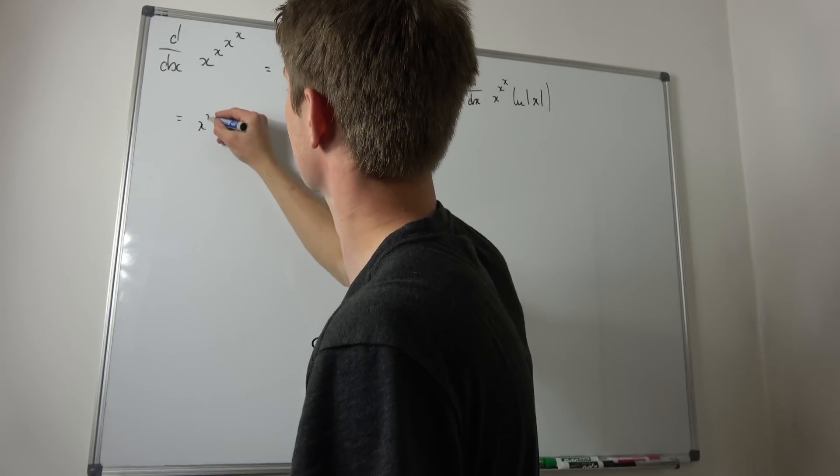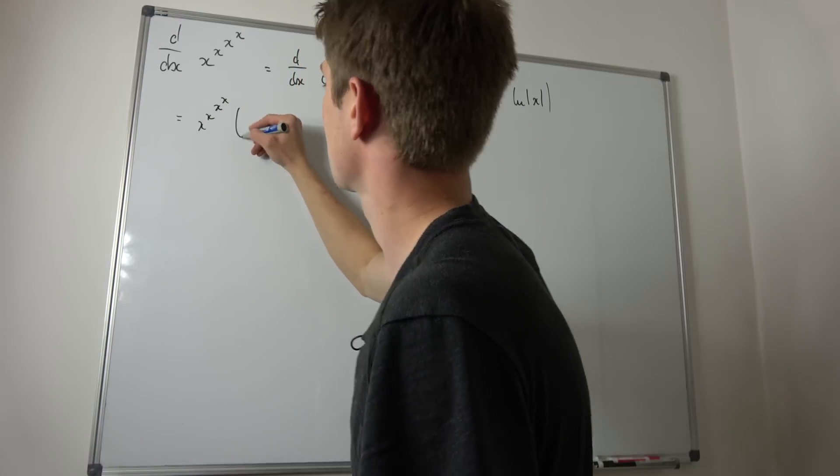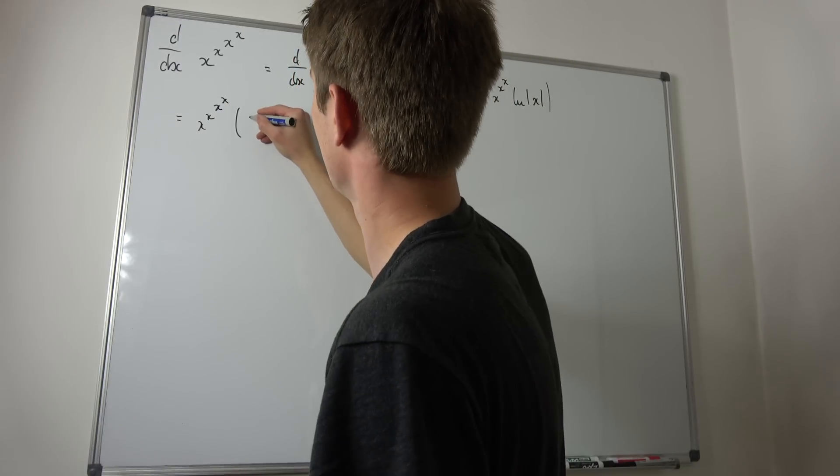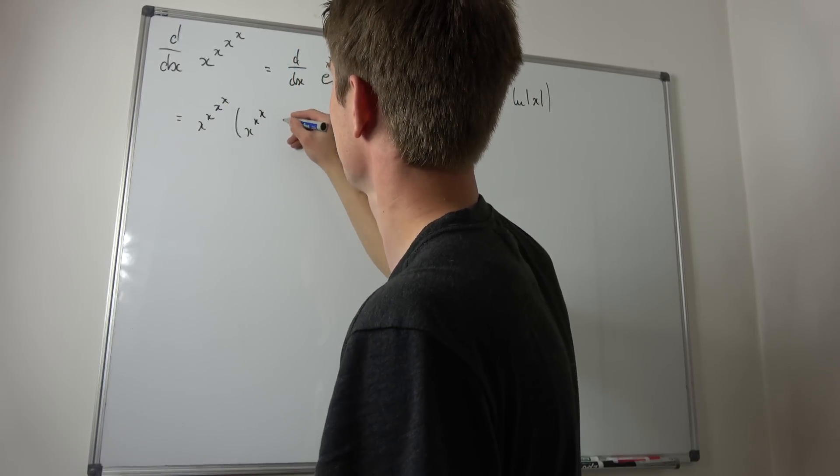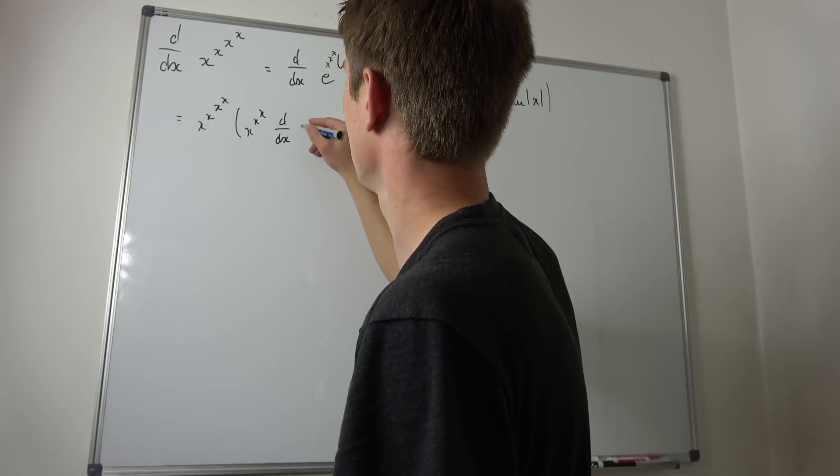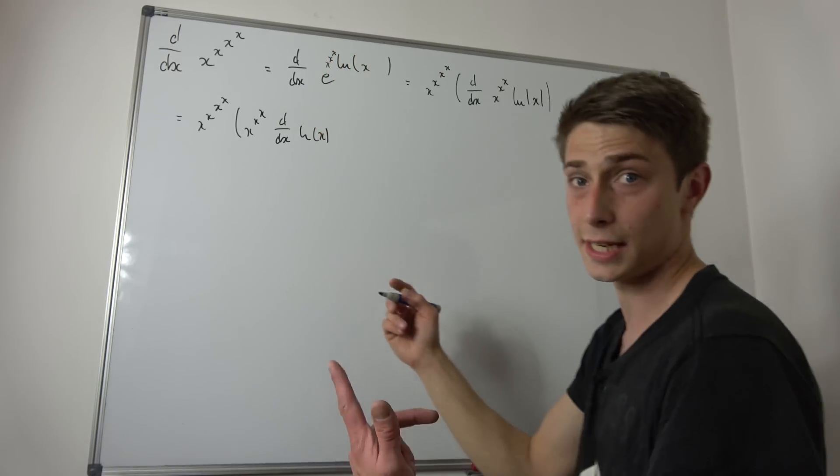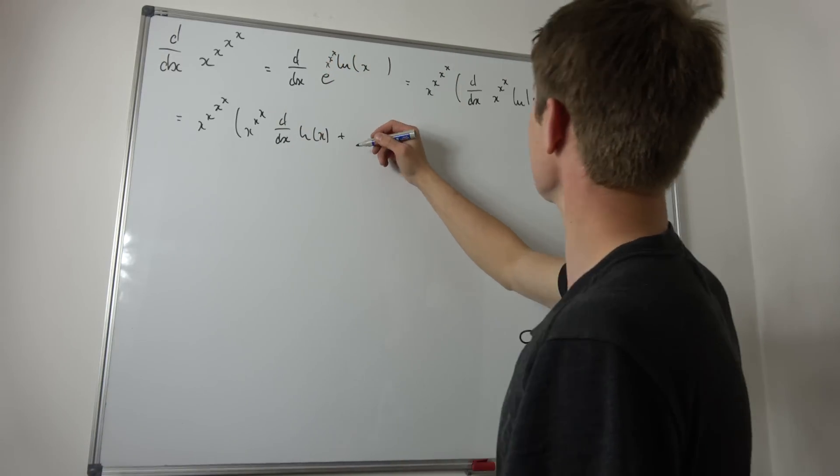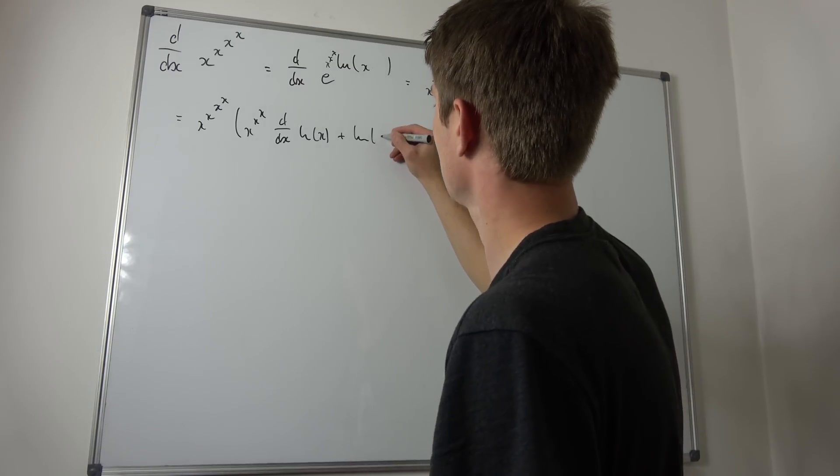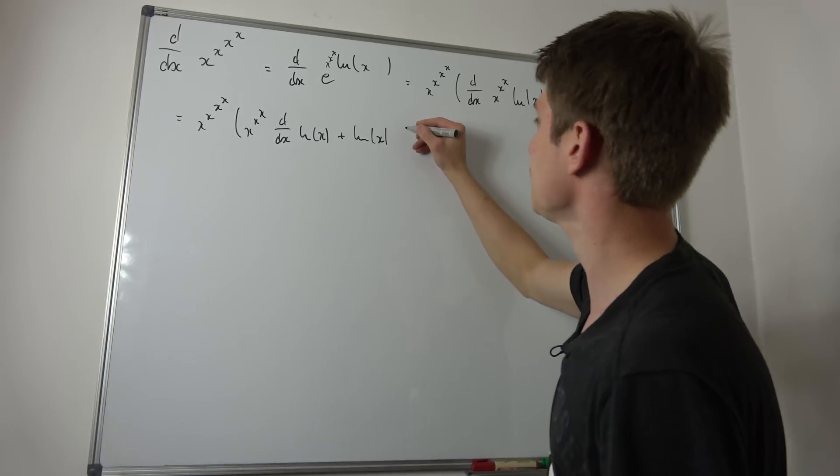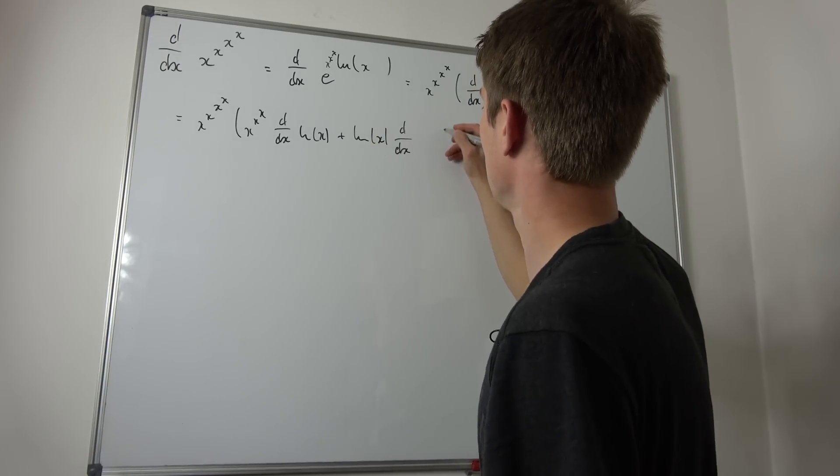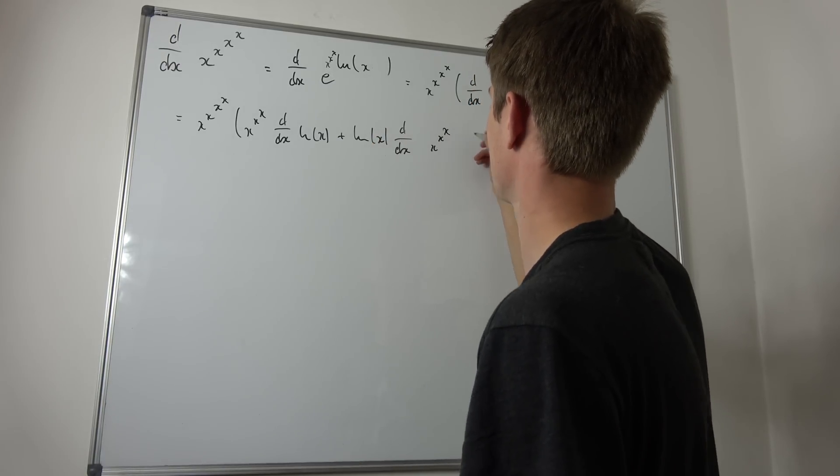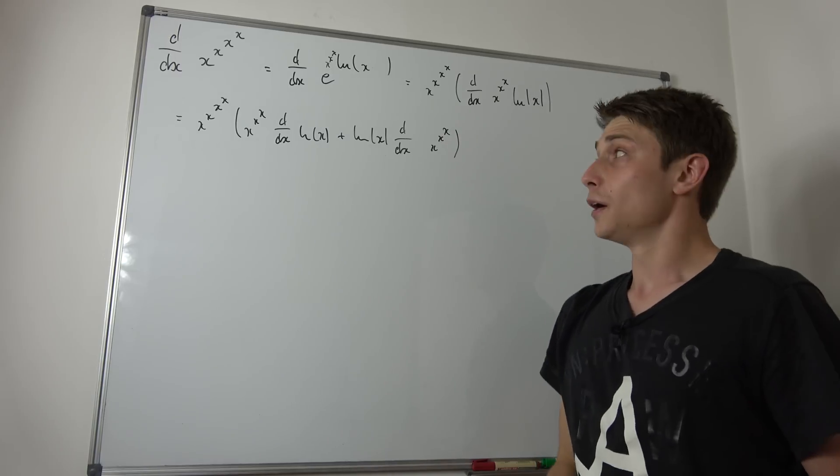So now we have to use the product rule - differentiating the first term times the regular stuff right here, and then differentiating this term times this stuff. So just simple product rule. So that's equivalent to saying we have x^(x^x) times, and now we have x^x times d/dx of natural log of x - that's the first term.